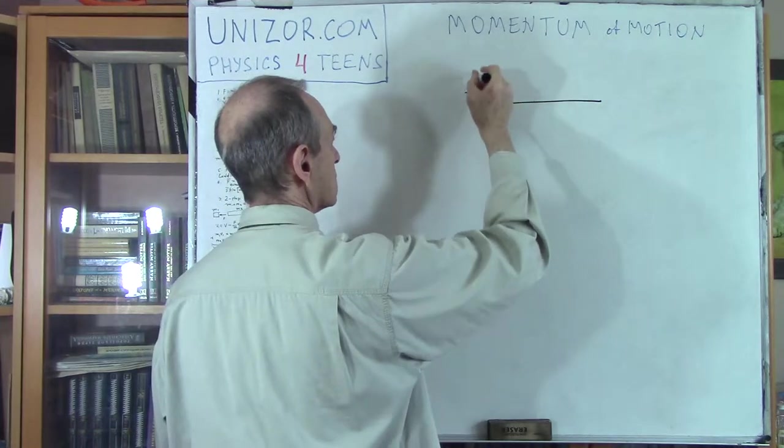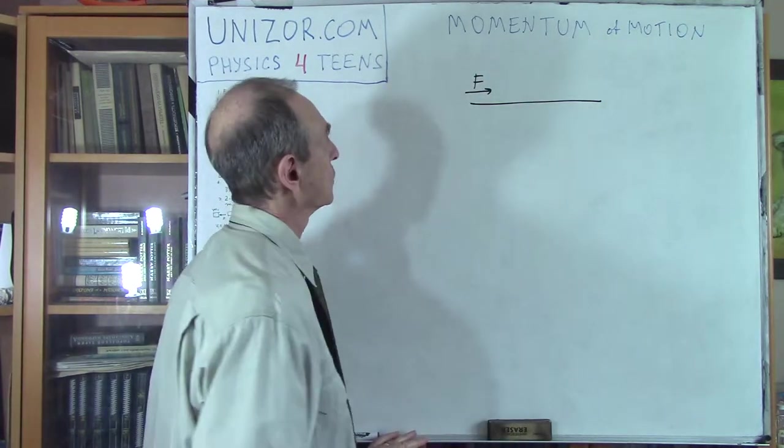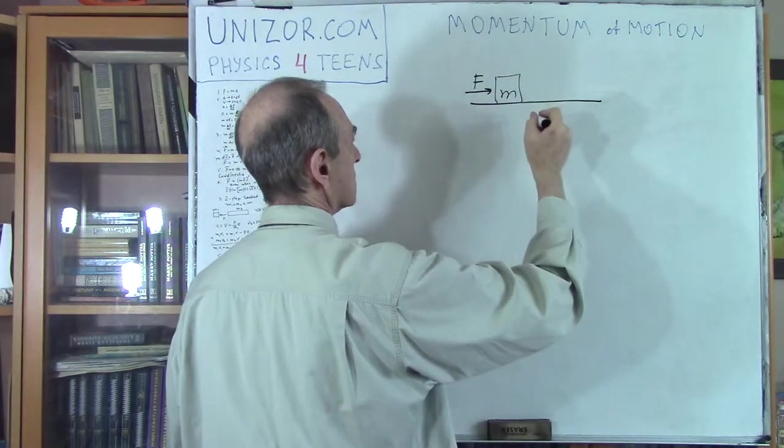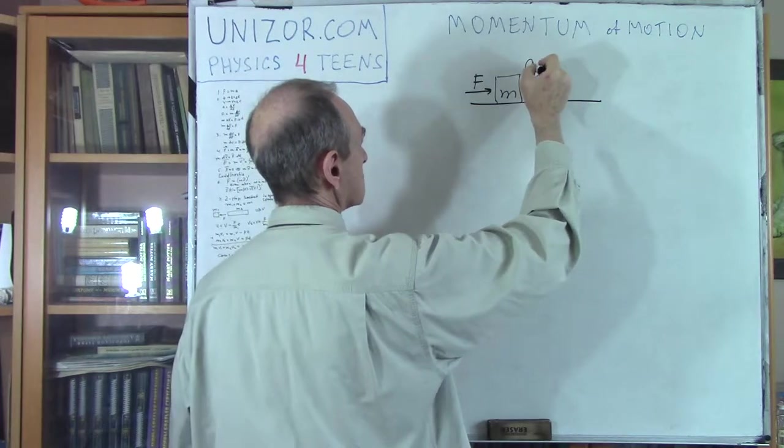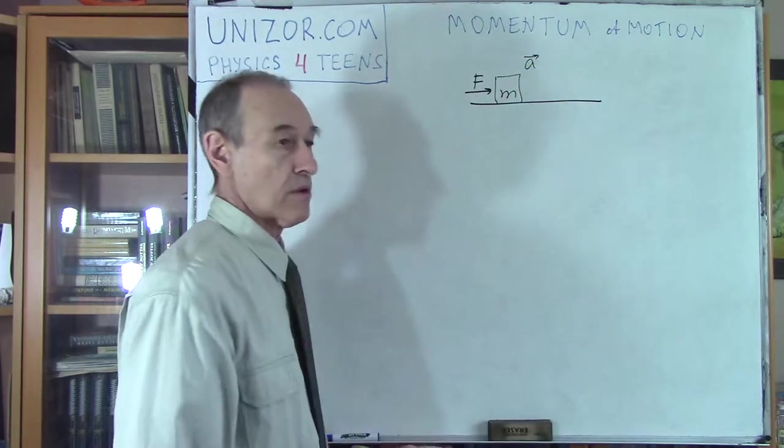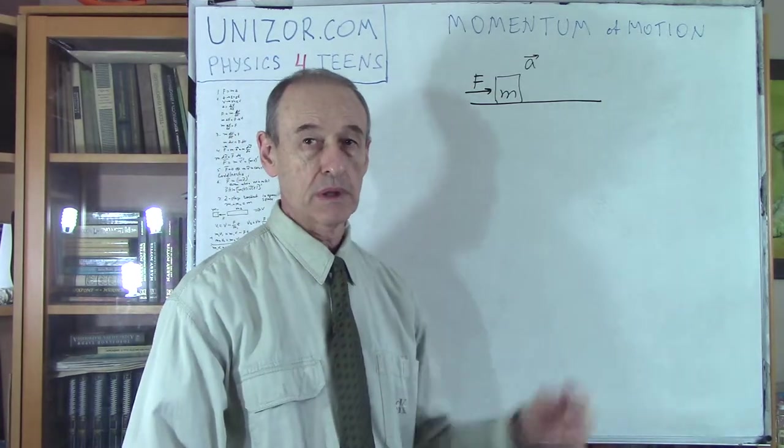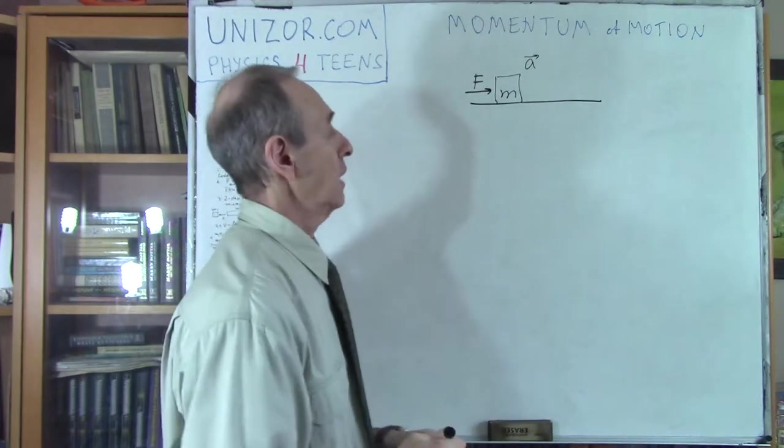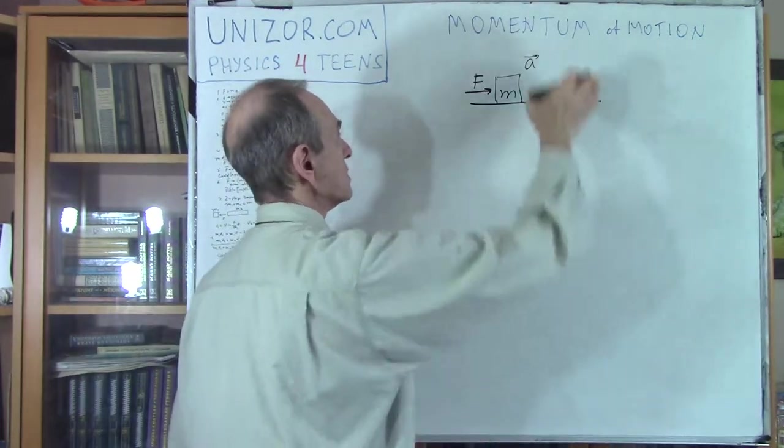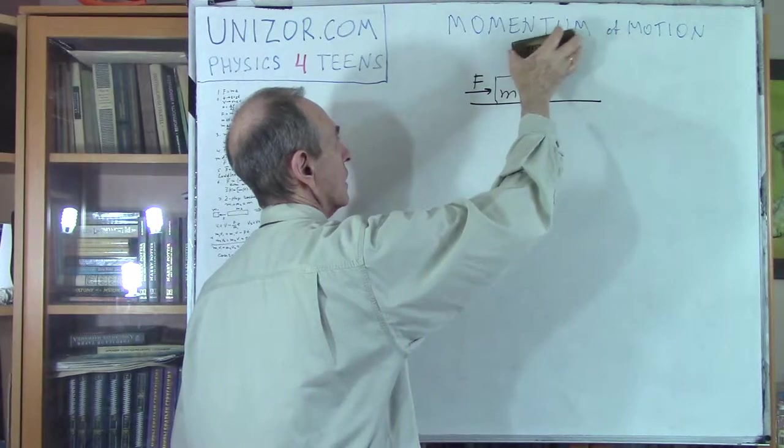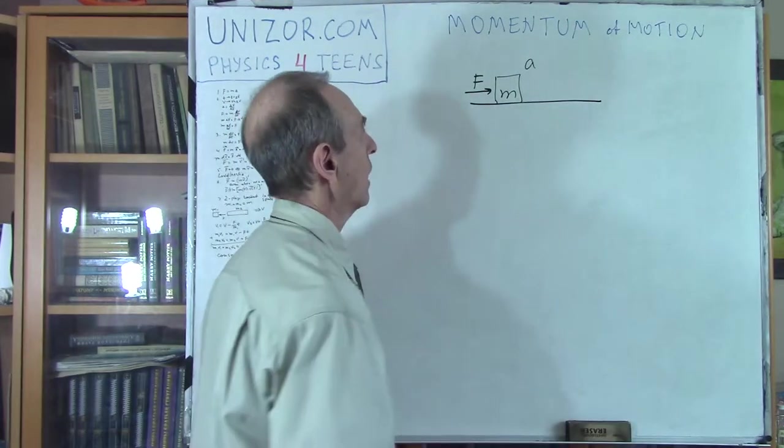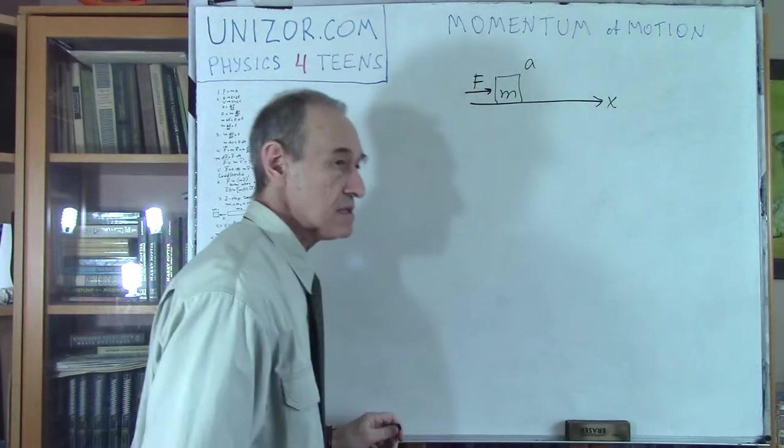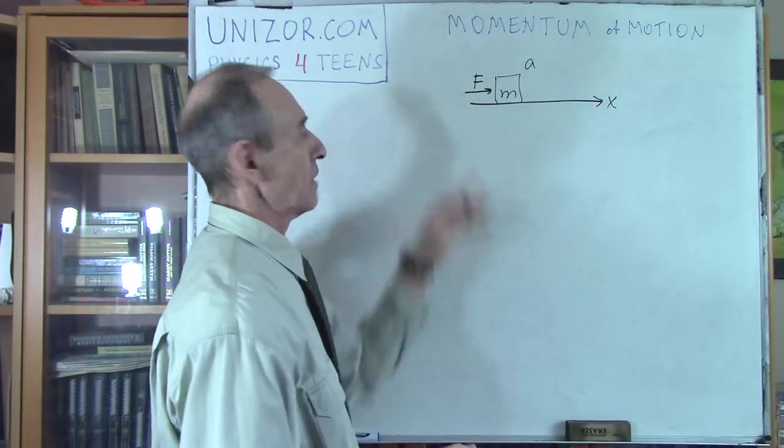Since there is constant acceleration, there is a force, obviously. We are assuming that we're talking about the case when there is a straight line. This is the trajectory of the movement. The force is exactly along this line. This is our object with certain mass and certain acceleration directed along the same line.